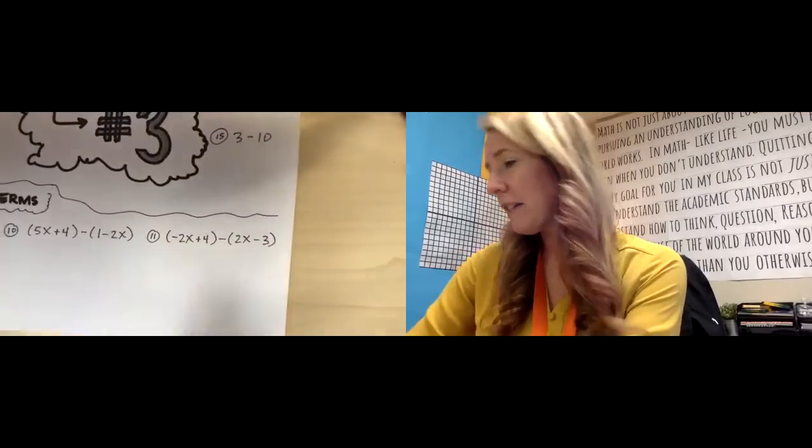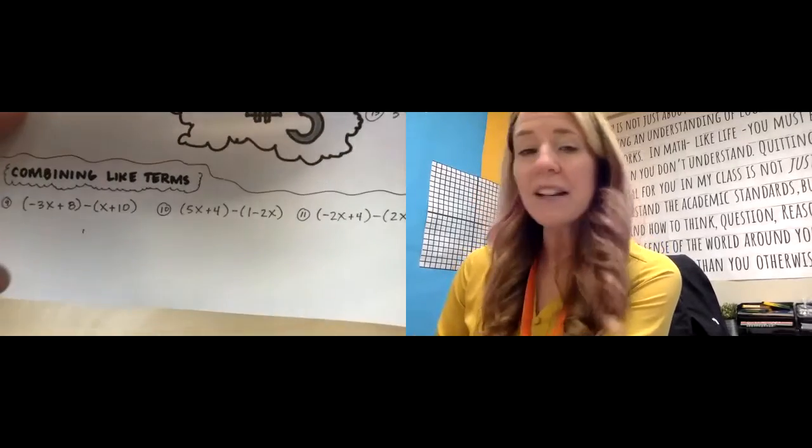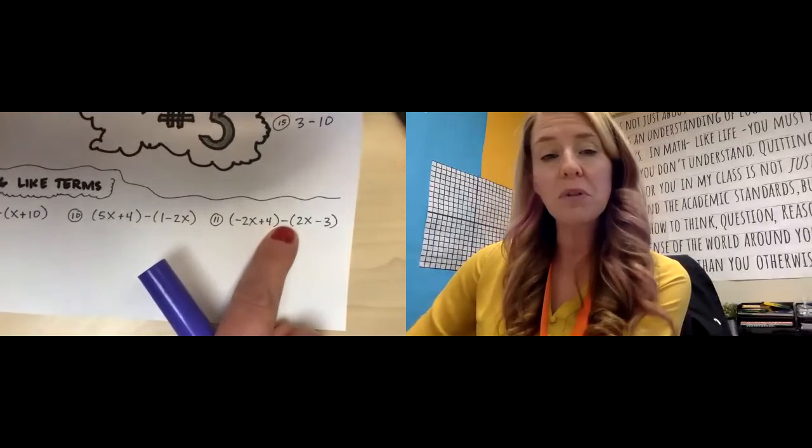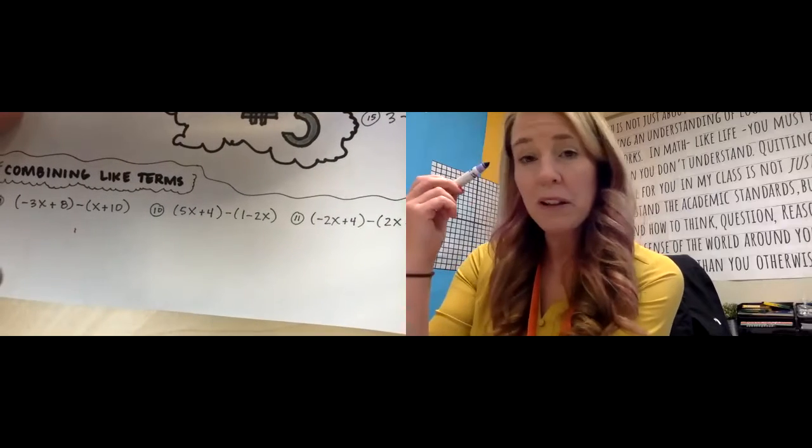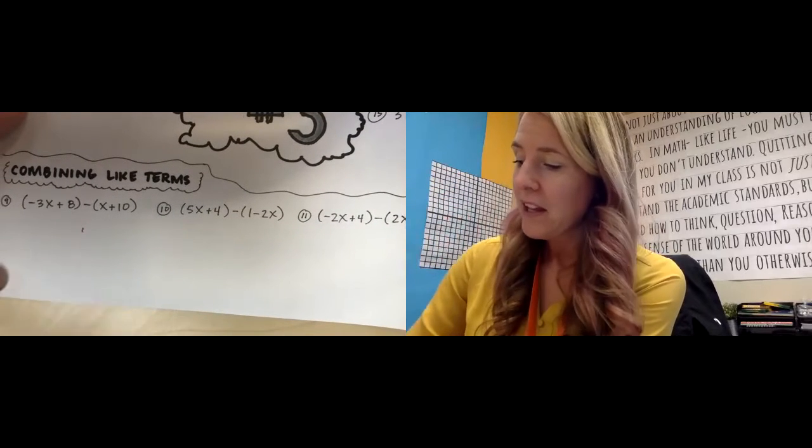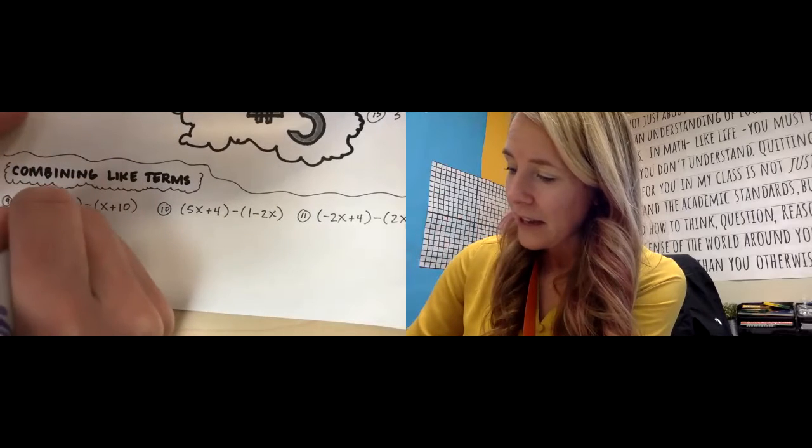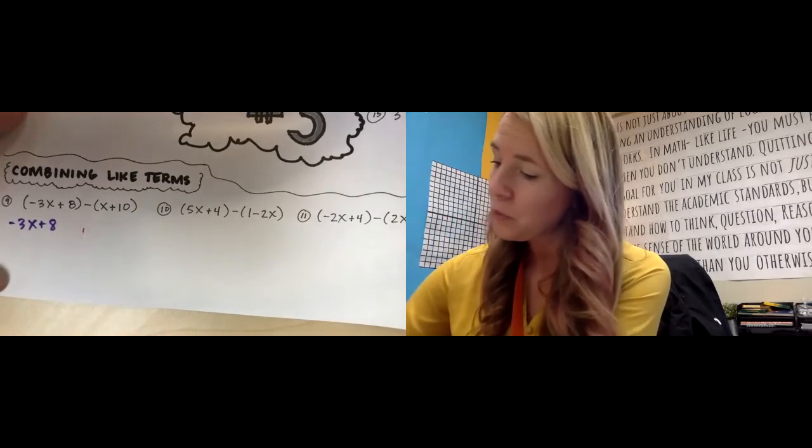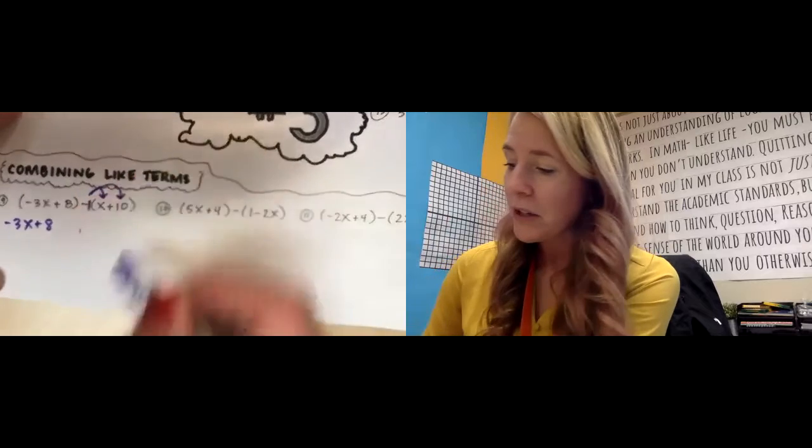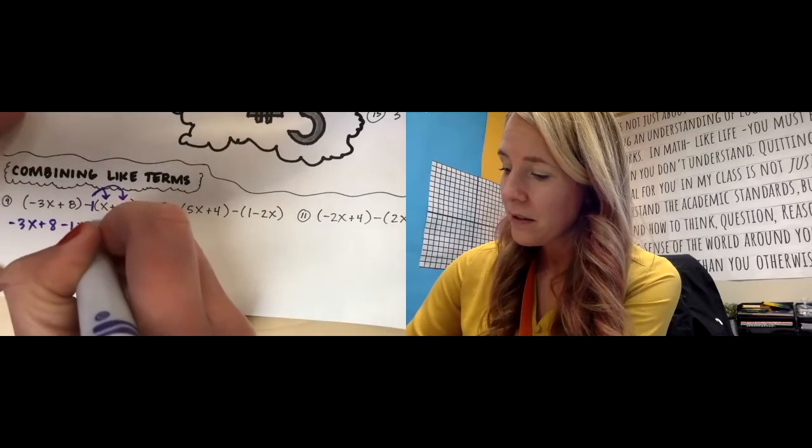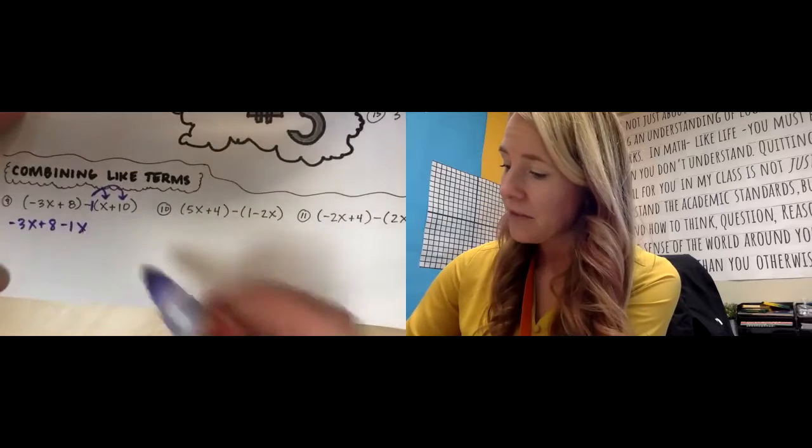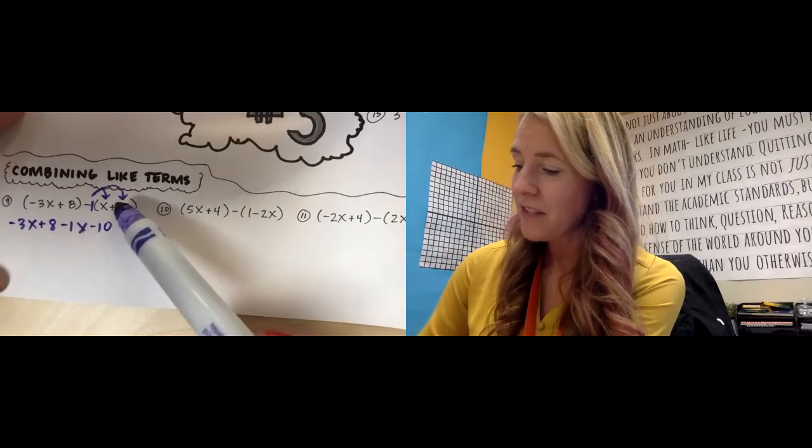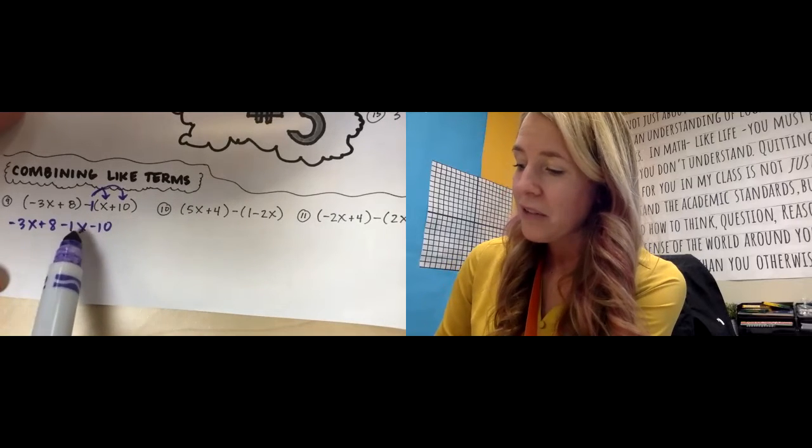The next section of our spiral review number three is we are combining like terms. Let me get my paper set up here a little bit better. When we combine like terms, it's not too bad unless we have these subtraction symbols in here. Subtraction symbols, they're going to change our signs a little bit. So we just have to be really careful there. That should be like a red flag to you that you have to watch out. So if I have negative 3X plus 8, that can stay the same, but I want you to think of this as having a negative one in front of your parentheses right here. So I'm going to take that and distribute it just like it's a waitress. Negative one X, and then negative one times 10 is going to be negative 10.